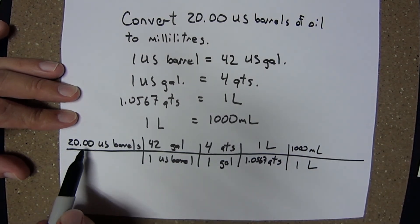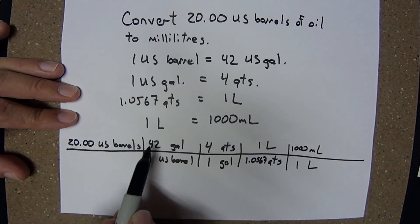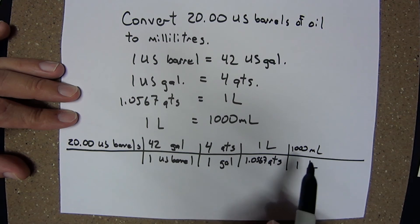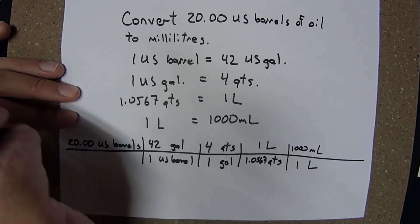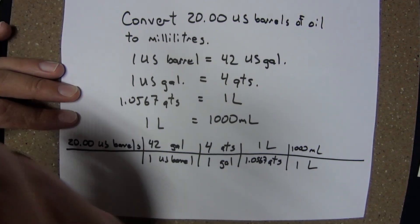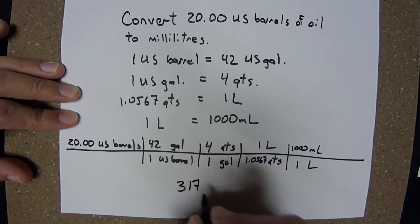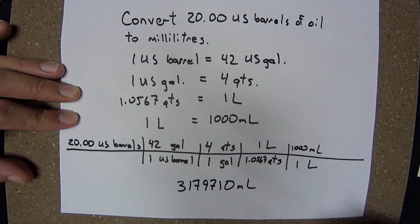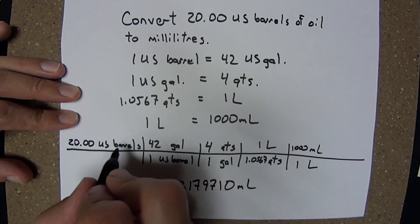So here I'm going to take 20.00 times 42 times 4, divide by 1.0567 times a thousand. I do all of that arithmetic and I get 3179710 milliliters.